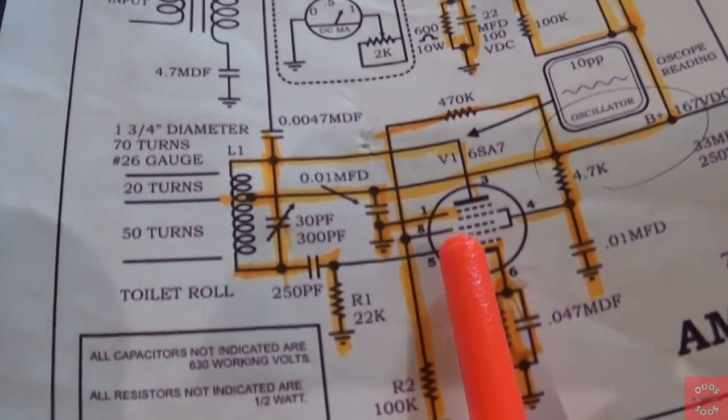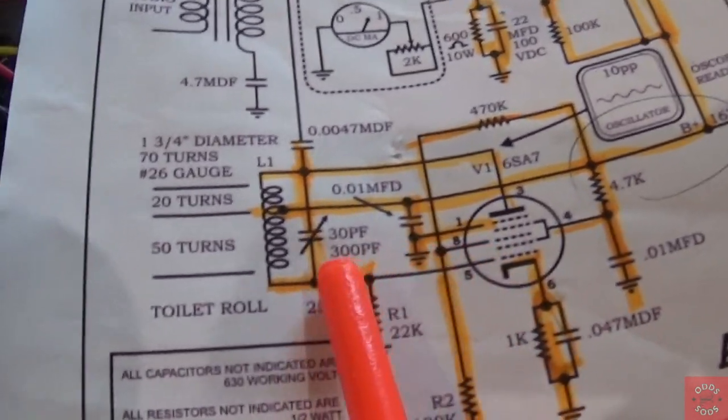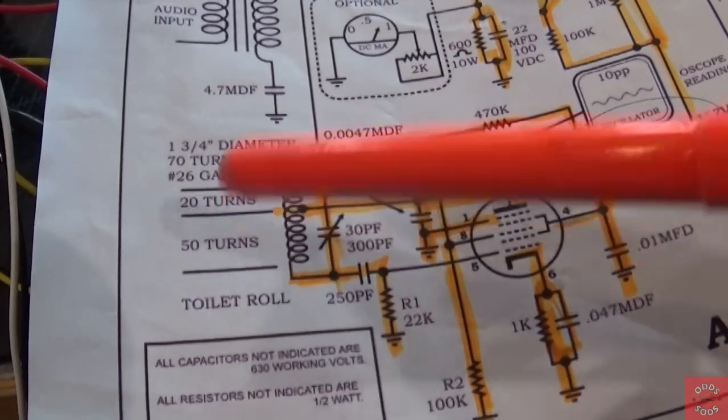Pin 5 of the V1, I'm getting 0 volts. I'm supposed to have negative 6.5 here. But I've done some troubleshooting.